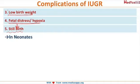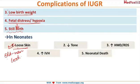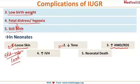IUGR babies usually have loose skin, giving them an old man look. The general tone of the body is decreased. There is increased incidence of hyaline membrane disease or respiratory distress syndrome, increased risk of intraventricular hemorrhage, increased risk of necrotizing enterocolitis, and neonatal death can also occur.